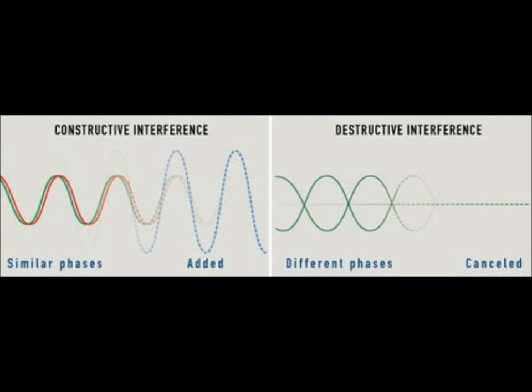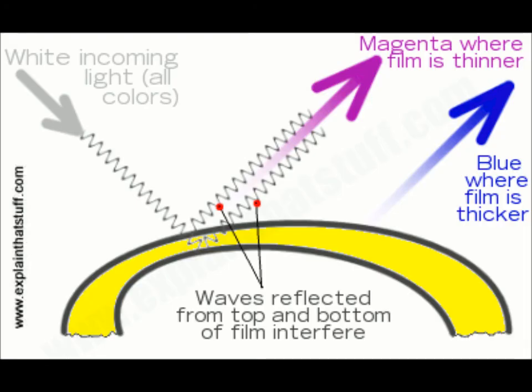As the film thickness changes, the extra distance the second ray travels changes. Constructive interference occurs when the total extra distance matches the specific wavelength of light, and destructive interference occurs when it is half a wavelength. The colors of a bubble depend on the thickness of the film. As a bubble dries out, it becomes thinner and the color changes.